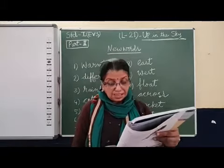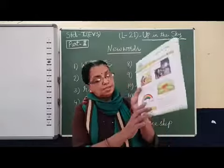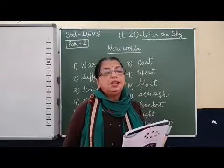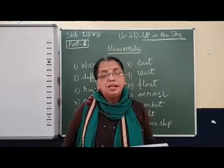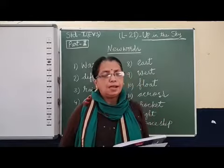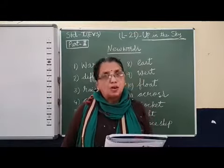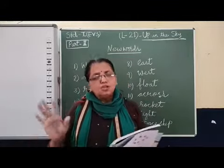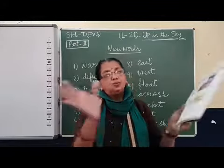Sometimes after the rain, we see a band of seven colours across the sky — it is called a rainbow. To remember the seven colours, we use: V for violet, I for indigo, B for blue, G for green, Y for yellow, O for orange, and R for red. The rainbow appears when sunlight falls on raindrops after the rain stops.